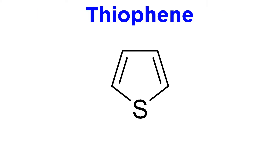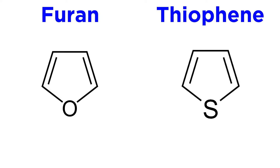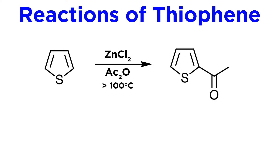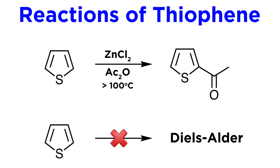Now let's move on to thiophene. This is the sulfurous analog of furan, in that the molecule is almost the same, just with a sulfur atom instead of oxygen. However, its resonance energy is 29 kcal per mole, so it is quite a bit less reactive than furan. For example, looking at the same Friedel-Crafts chemistry we examined earlier, much higher temperatures are required. In addition, thiophenes are not reactive enough to participate in Diels-Alder reactions.